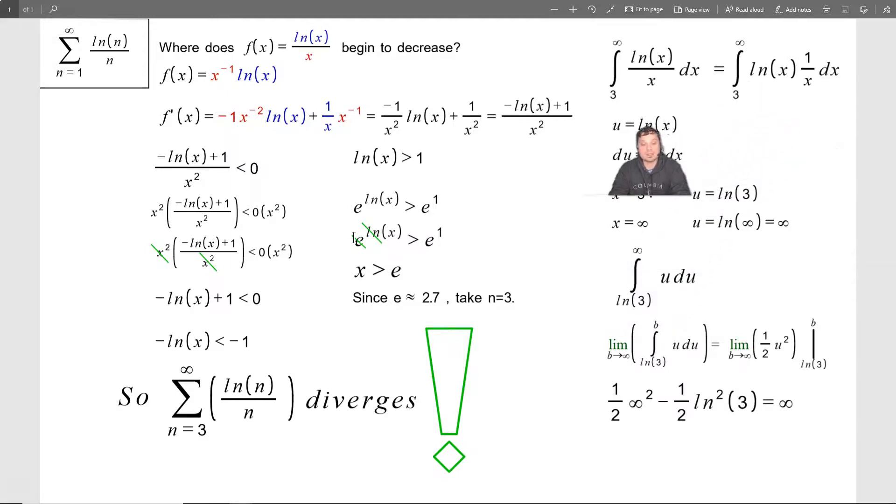ln of x, well, that's defined to be u. 1 over x dx is defined to be du. So the new one looks much simpler just this way. ln of 3, positive infinity, u du.